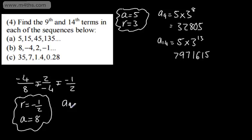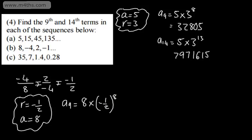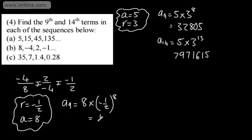Let's now look at the 9th term. A sub 9 is going to be equal to 8, the first term, times by negative 1 half to the power of 8. If you fancy a bit of a challenge, these are all powers of 2 if you want to work it out. Let's just put in 0.5 to the power of 8 — that's going to give us 1 over 32.